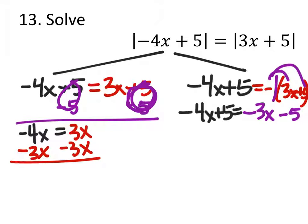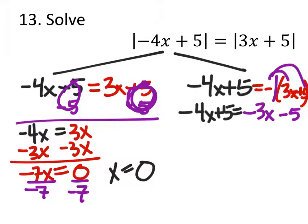If you added 4x, you'd just have a positive 7x, but the way that I did it, I've got a negative 7x. Then when I divide both sides by negative 7, it's not going to change anything. It just tells us that x must be 0. So that's our first answer.